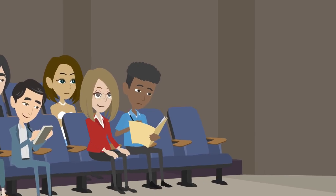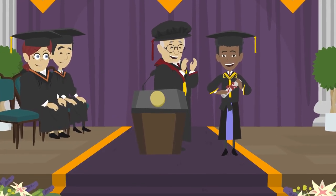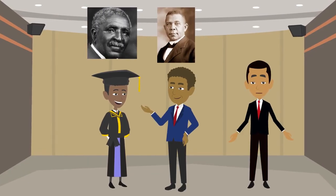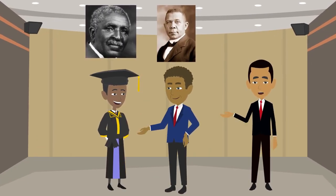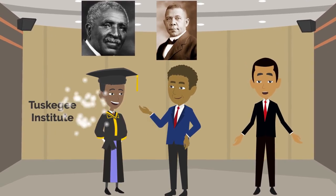At Iowa State, George studied agriculture and botany and graduated with a bachelor's degree in agriculture. African-American leader Booker Washington, the founder of Tuskegee Institute, asked Carver to lead the agricultural department at Tuskegee.